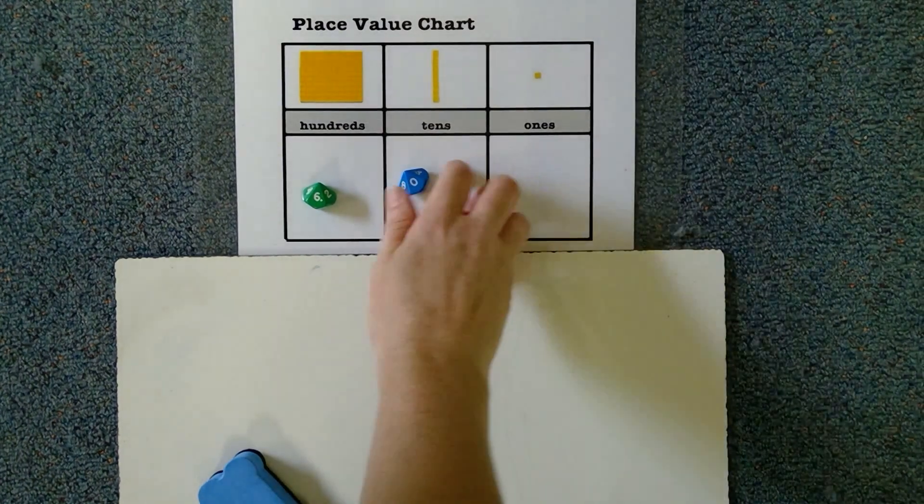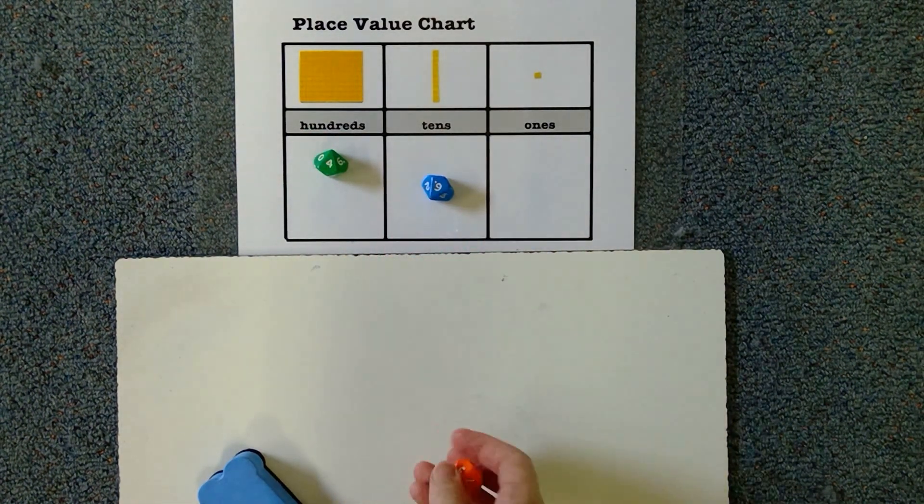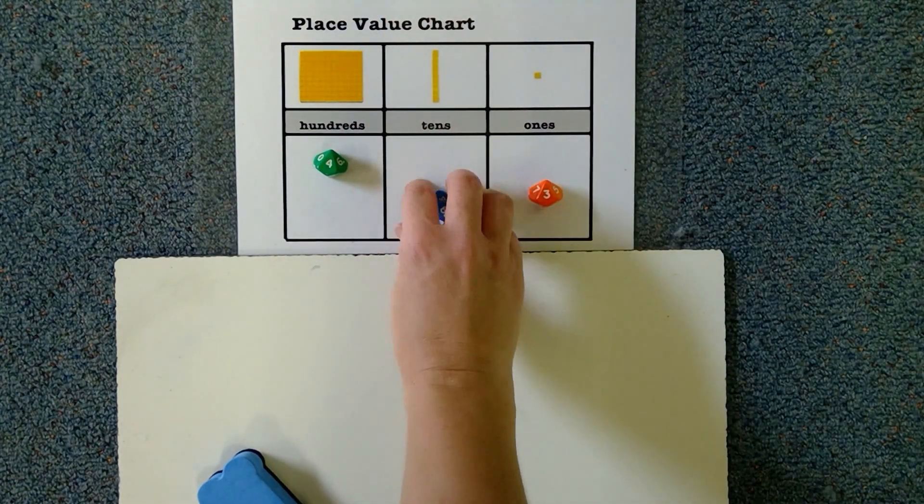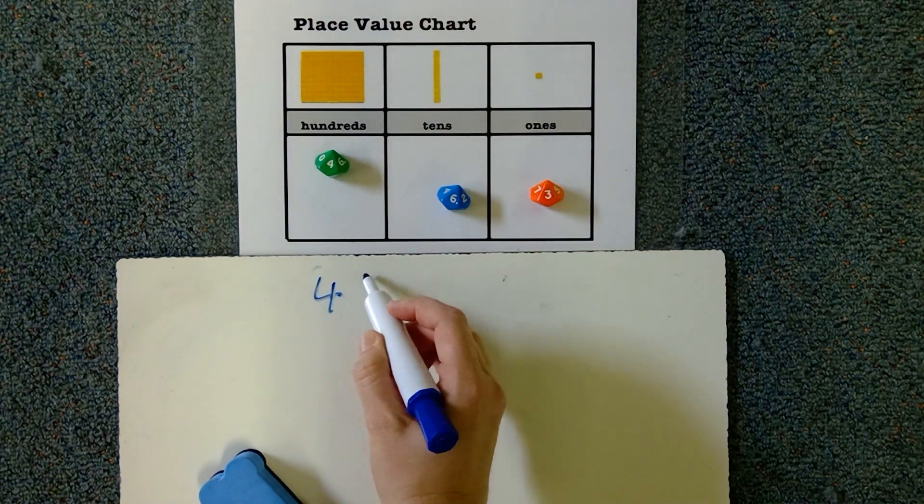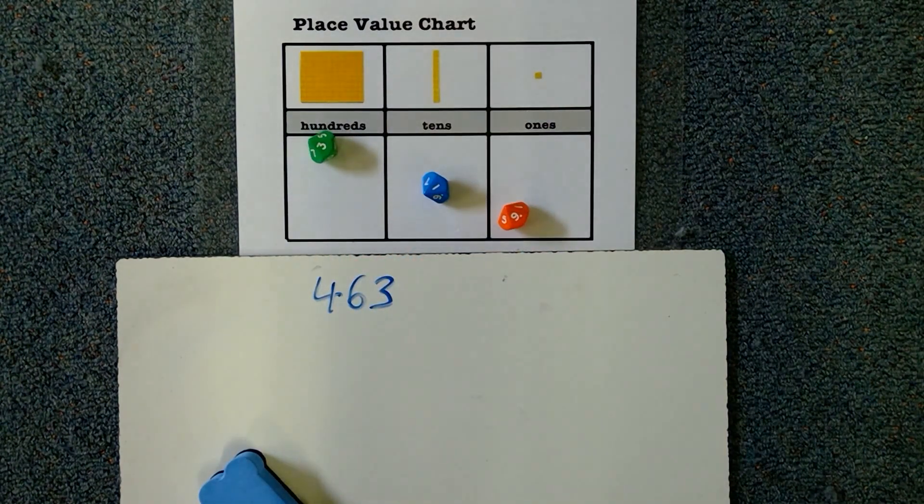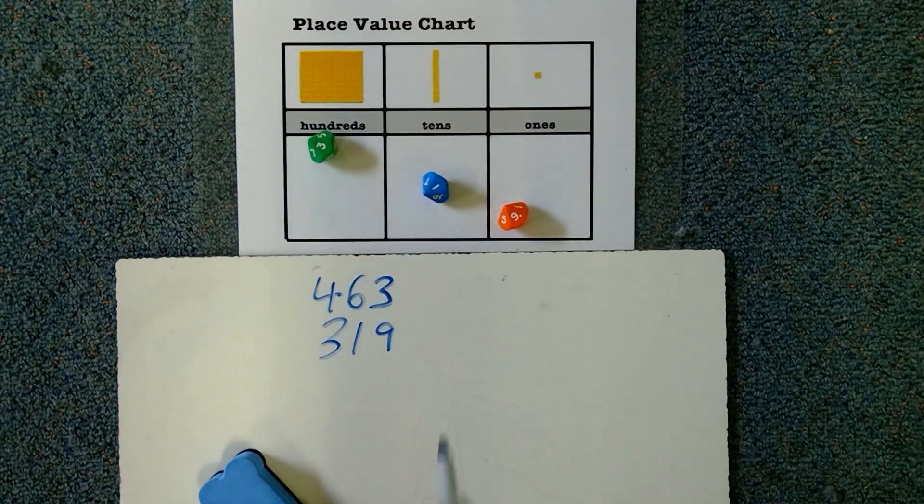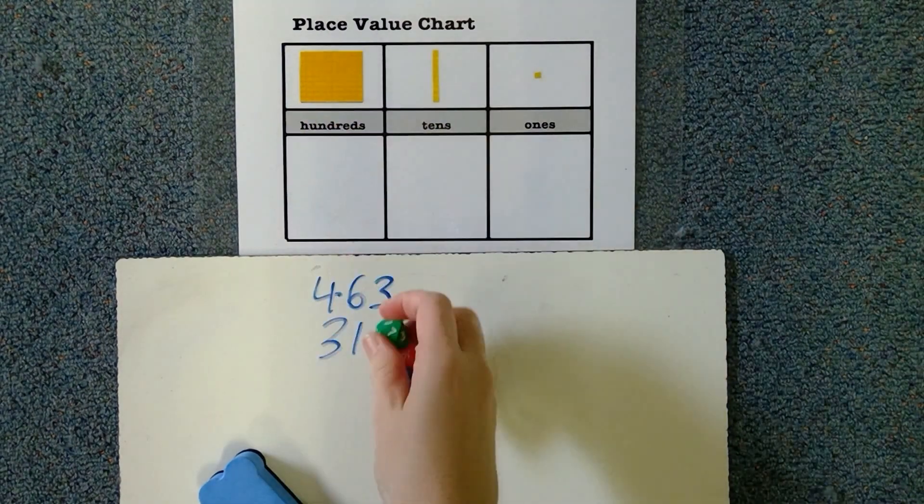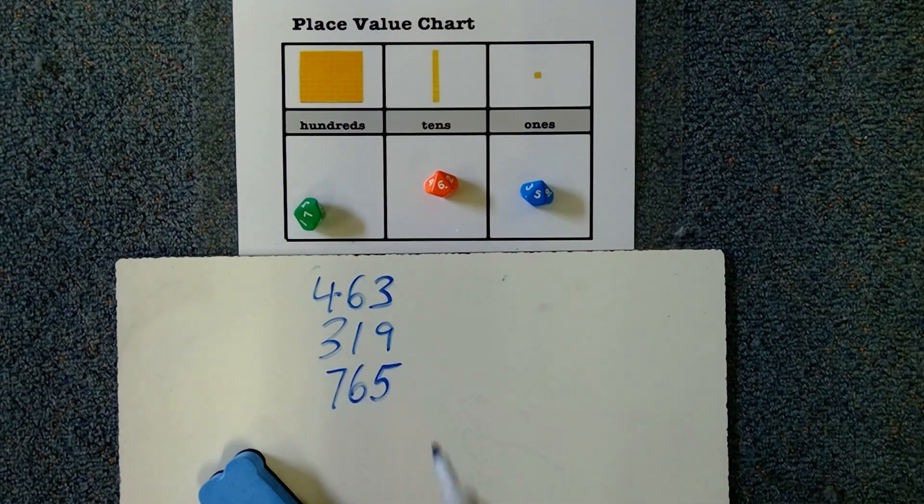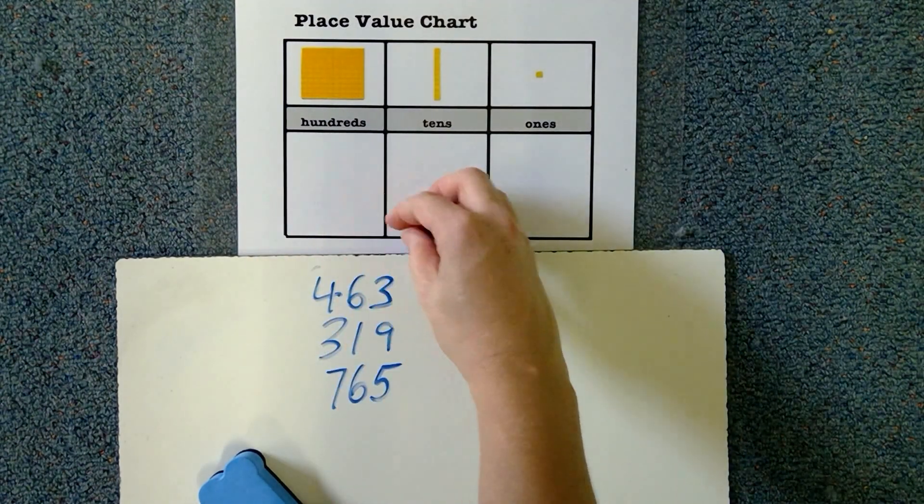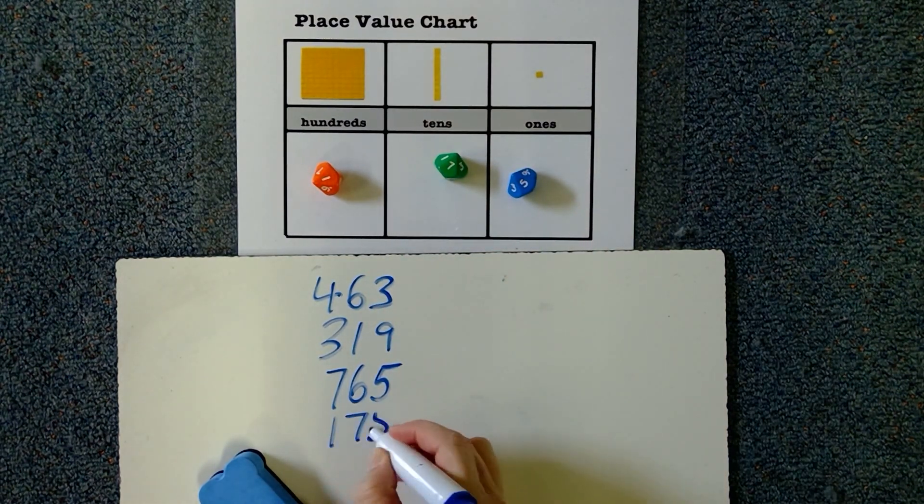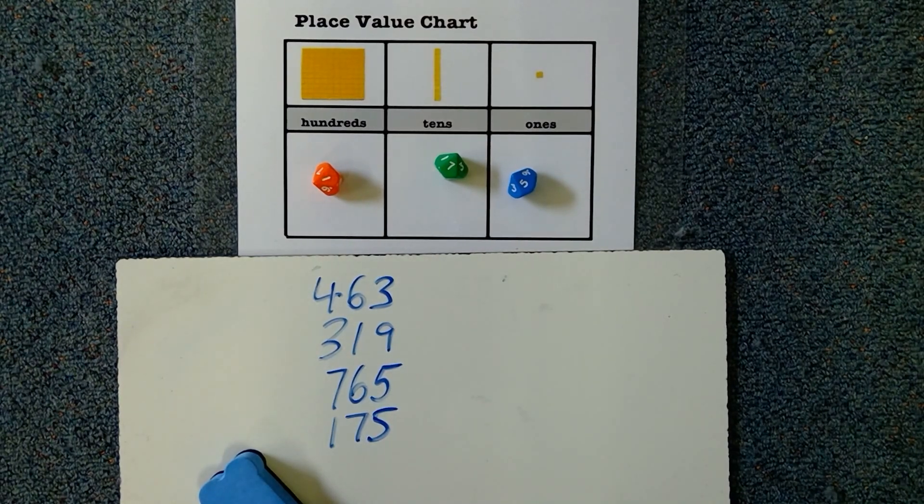Okay guys, one more where I'm going to help you out here. Nope, that was a six. 463, 319, 765, 175. Okay, go. You've got 30 seconds to put them in order.